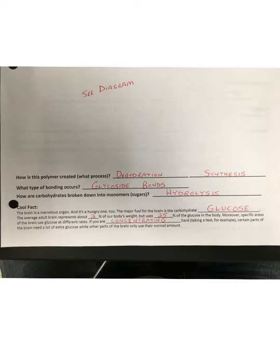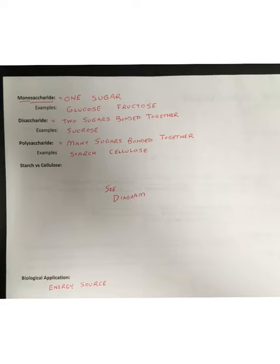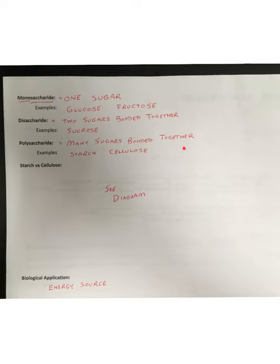To finish up with carbohydrates, carbohydrates are commonly known as sugars. Anytime you see mono, it means one; saccharide means sugar. So monosaccharide equals one sugar — examples we just drew: glucose and fructose. Disaccharide means a sugar made up of two sugars bonded together — our example was sucrose. And then the last thing is a polysaccharide, which is made up of many sugars bonded together. Some examples of those are starch and cellulose.